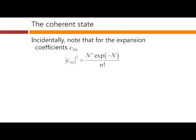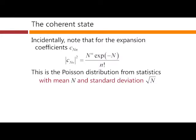So in this expansion, note that the modulus squared of these coefficients happens to have the following formula. And you might recognize that formula. This is the Poisson distribution from statistics. And in this case it would have a mean N and a standard deviation root N.